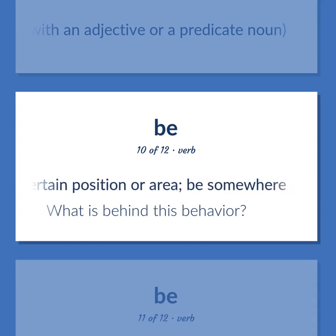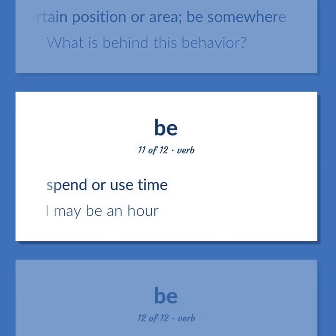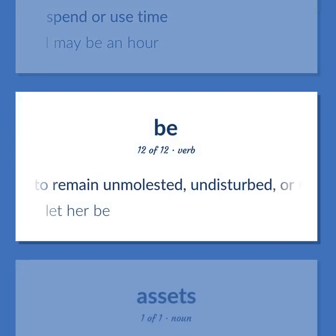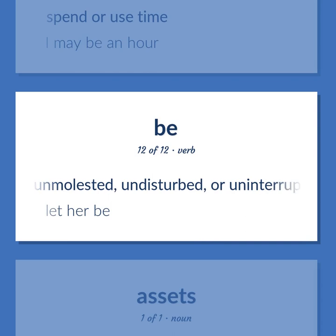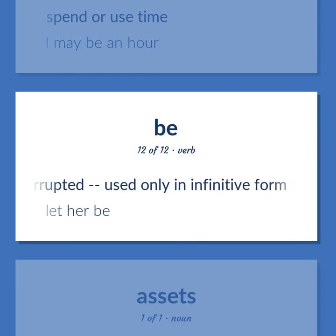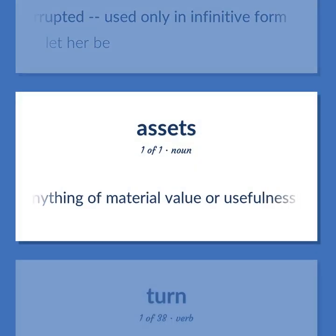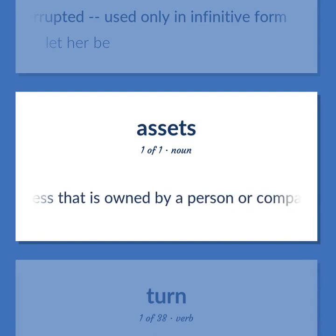To occupy a certain position or area; be somewhere — what is behind this behavior? To spend or use time — I may be an hour. To remain unmolested, undisturbed, or uninterrupted — used only in infinitive form. Let her be. Anything of material value or usefulness that is owned by a person or company.